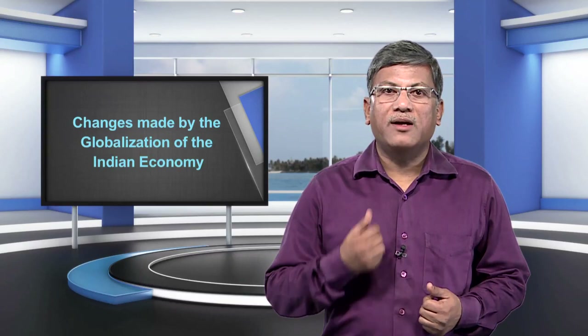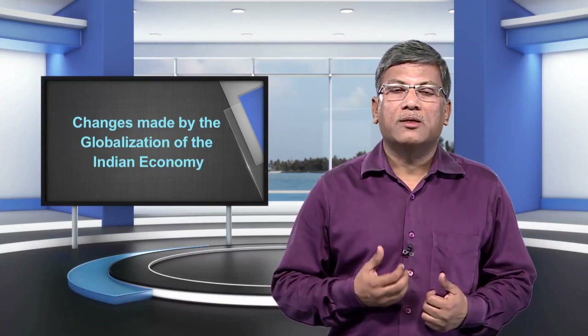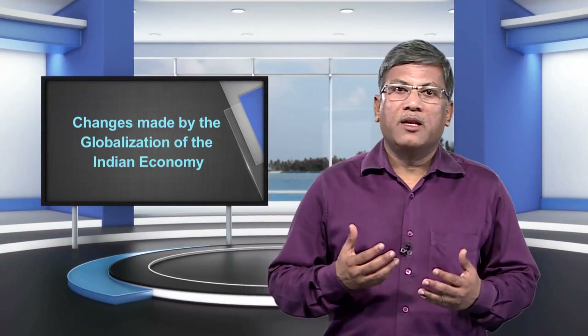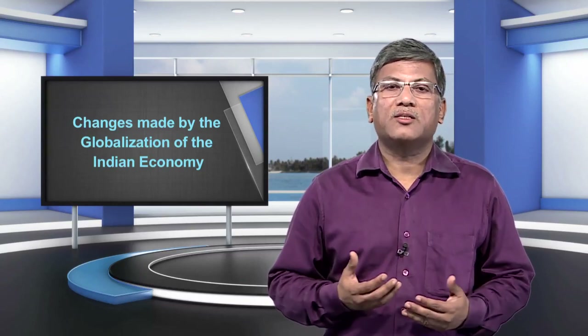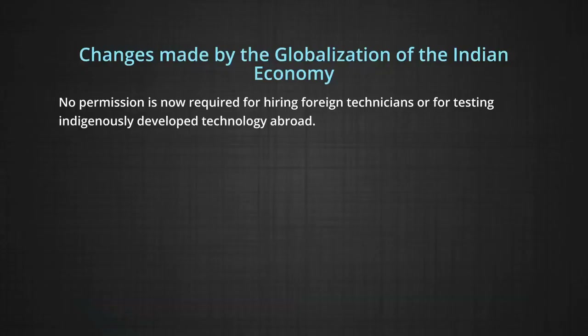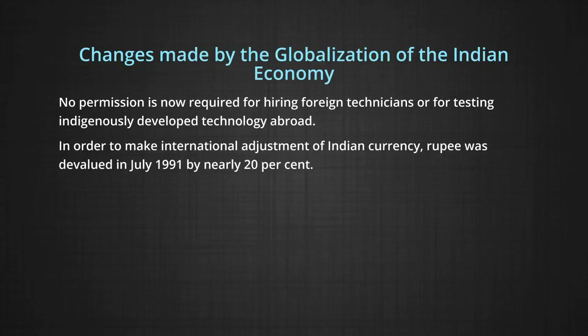Changes made by the globalization of the Indian economy: the new economic policy prepared a specified list of high technology and high investment priority industries in which automatic permission will be available for foreign direct investment up to 51 percent foreign equity. In respect of foreign technology agreements, automatic permission is provided in high priority industries up to rupees one crore. No permission is now required for hiring foreign technicians or for testing indigenously developed technology abroad.